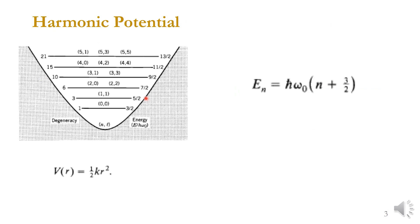We now consider a smoother potential: the harmonic oscillator model. Since there is no abrupt change in the nuclear potential, we assume a smooth potential V(r) = (1/2)kr². We solve this Schrödinger equation and find the energy eigenvalue for the three-dimensional case: E_n = (n + 3/2)ℏω₀.